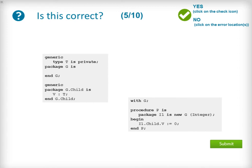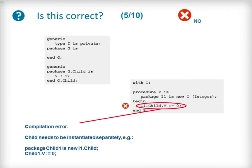The next question in the quiz uses a generic package G and a child generic package of G called child. Our procedure P instantiates the generic package G as I1 using an integer and then attempts to access the G.child package variable V. The code is incorrect and will result in a compilation error. A generic package needs to be instantiated separately — for example, we would need to instantiate child as child1 and then access the V variable.